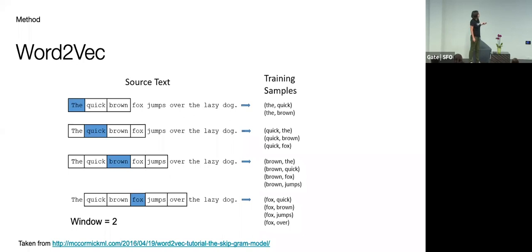So we generate training samples, the and quick, and the and brown. And then we can move this window to the right. So right now, the target word is quick. And then the neighboring words are the, brown, fox. And we can do this all the way until we hit the last of the sentence. And then we can do this for multiple sentences. So what we essentially learn is we generate training samples so that the words are always close together when they show up in sentences.